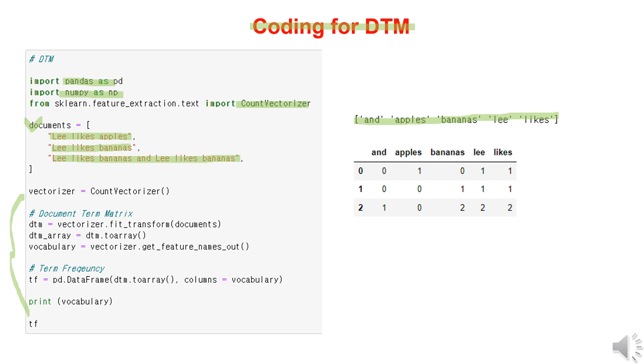Representing the frequency of each word, the vectors would be: for the first sentence, 01011; for the second sentence, 00111; for the third sentence, 10222. These vectors enable the computer to understand the text.